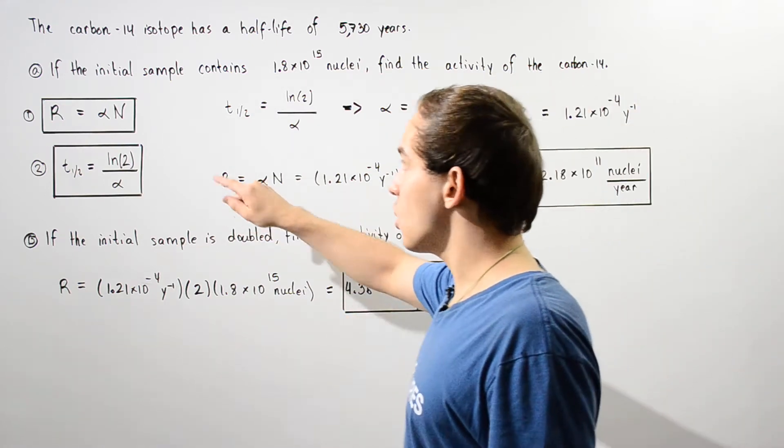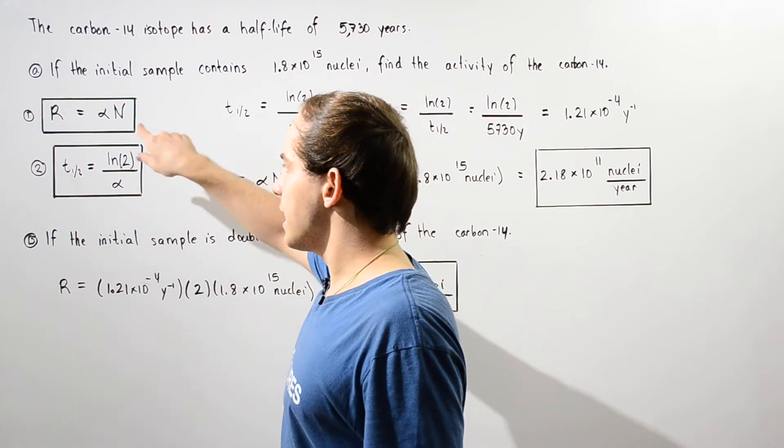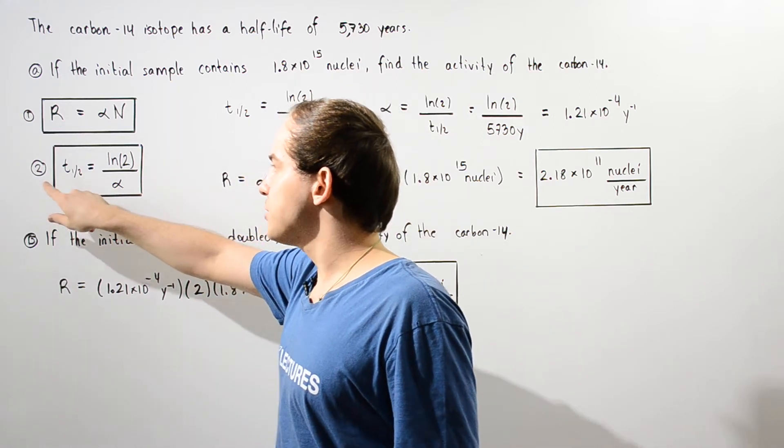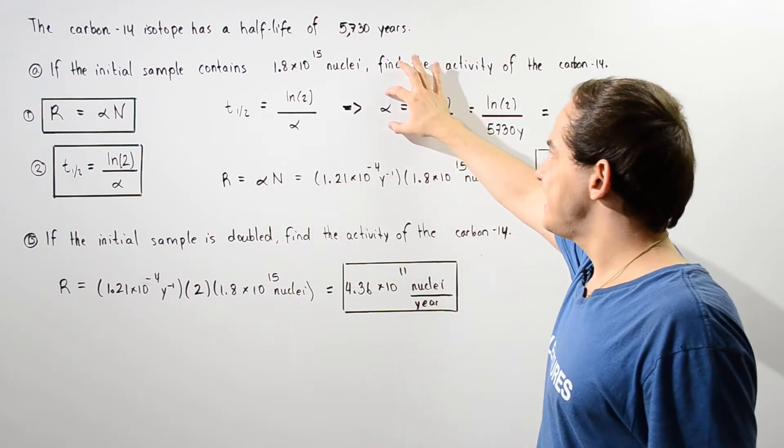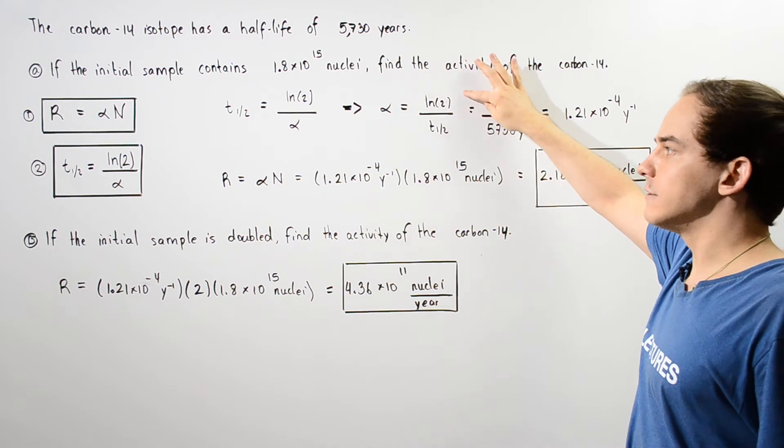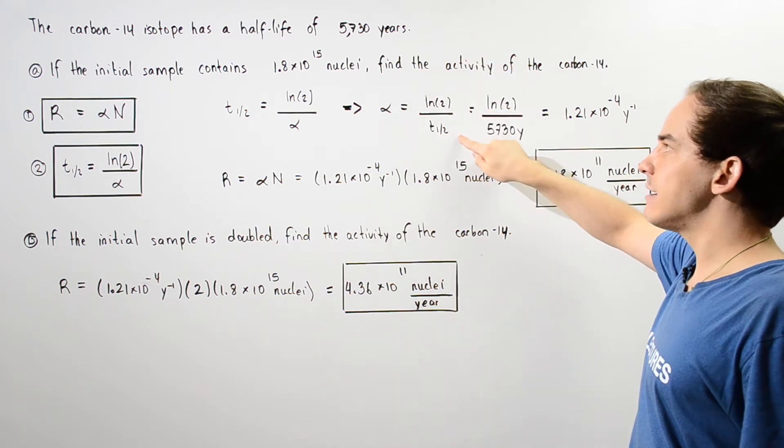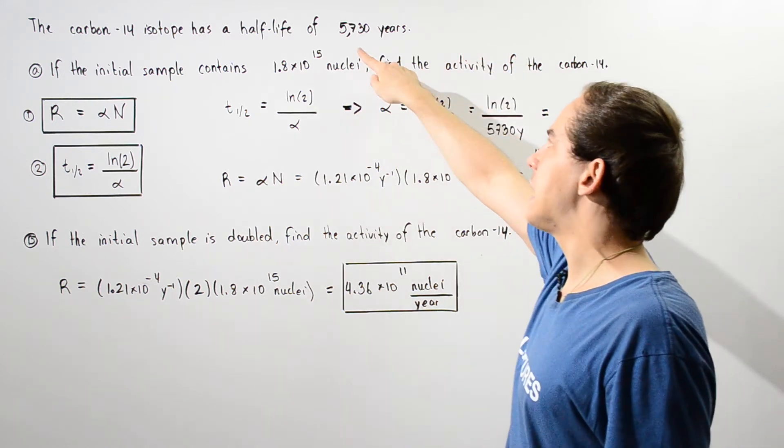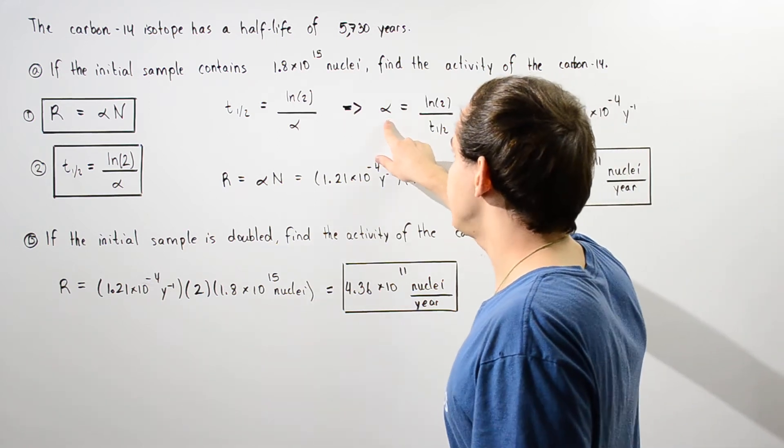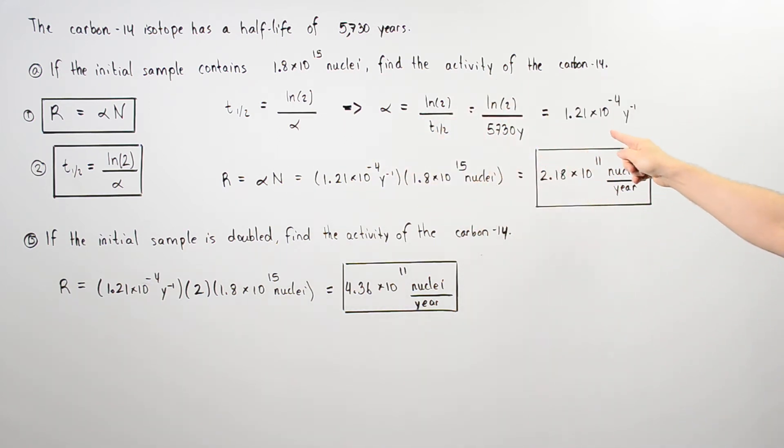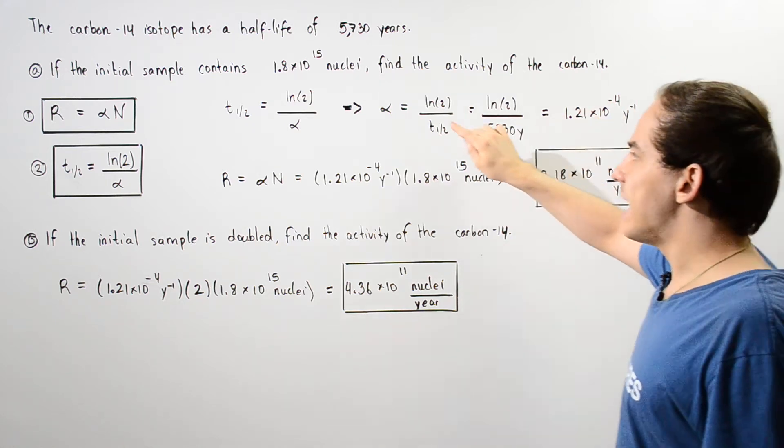In step one of Part A, we take equation two and solve for alpha. The decay constant equals the natural log of two divided by the half-life of 5730 years. We find that alpha equals about 1.21 times 10 to the negative four years to the negative one.